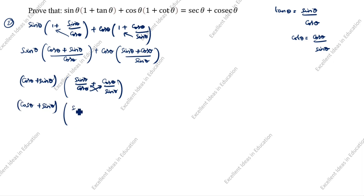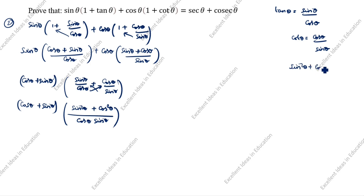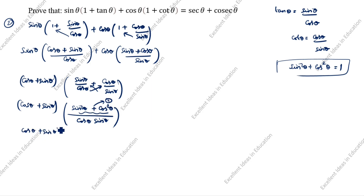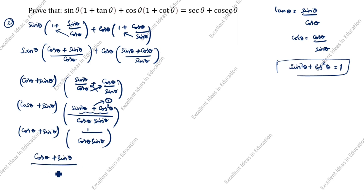So (cos θ + sin θ) into, after cross-multiplying inside: sin²θ + cos²θ, divided by cos θ · sin θ. What is sin²θ + cos²θ? It equals 1 — that is the formula. So this becomes 1. So (cos θ + sin θ) · 1 divided by cos θ · sin θ, which gives (cos θ + sin θ) divided by cos θ · sin θ.